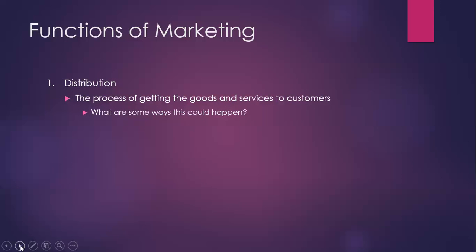So the function of marketing — there are seven of them, so check these down and make sure you understand them. The first function of marketing is distribution: how do we get the product from where it's created to the actual customers? That can be goods, services, or even ideas, but mostly we're talking about goods and services.